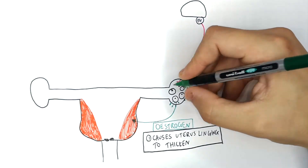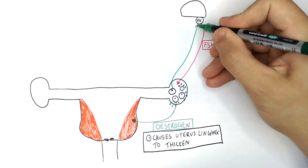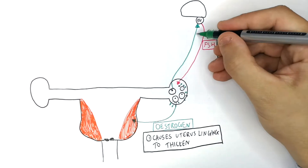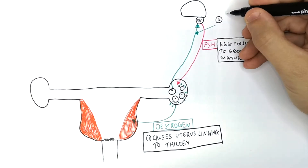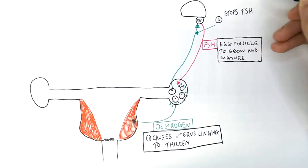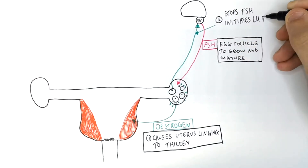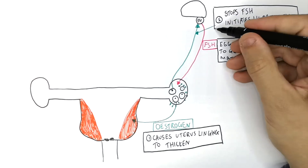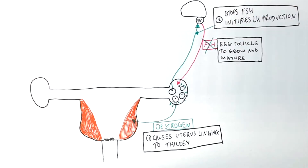Estrogen also does something else. It goes from the egg follicle to the pituitary gland, where it stops FSH production and initiates LH production. FSH is stopped as the egg follicle has now grown and matured.